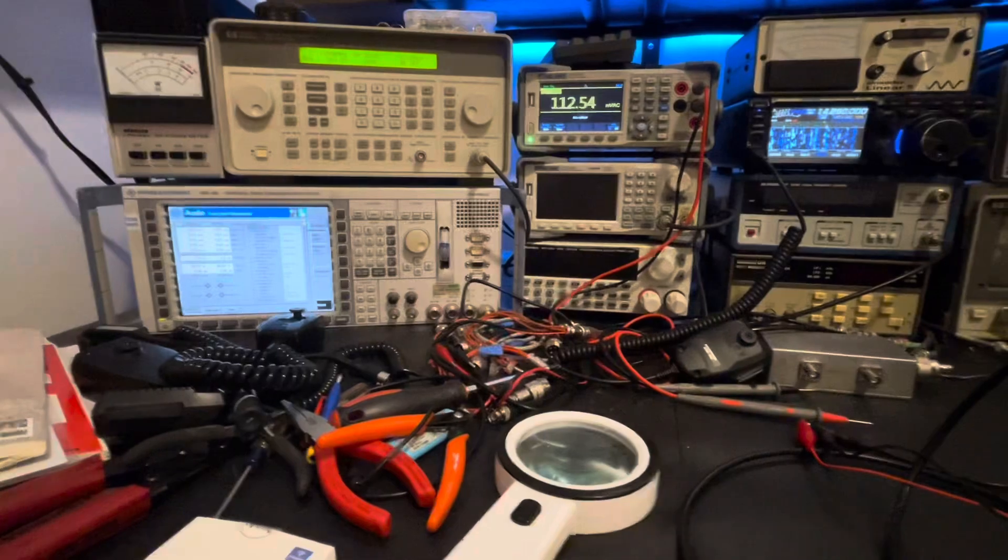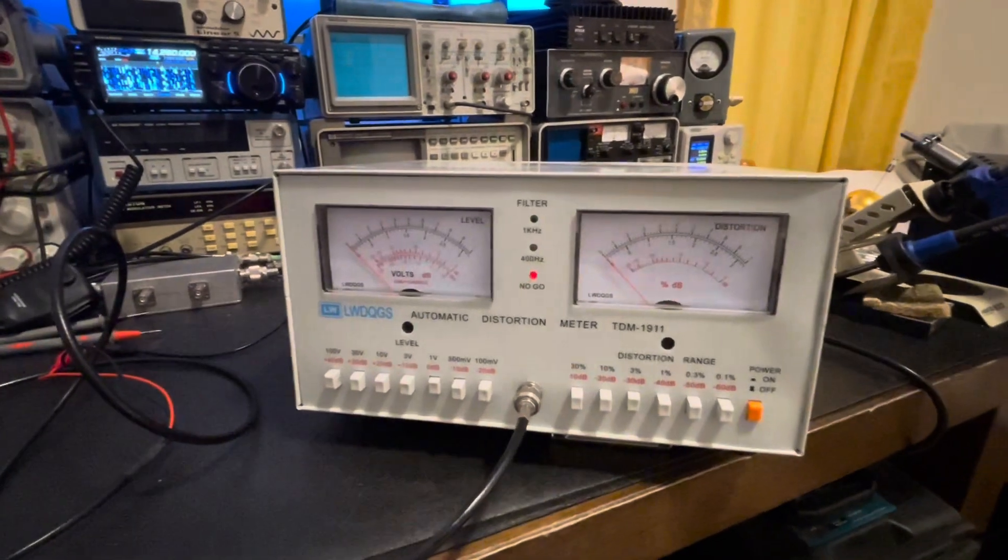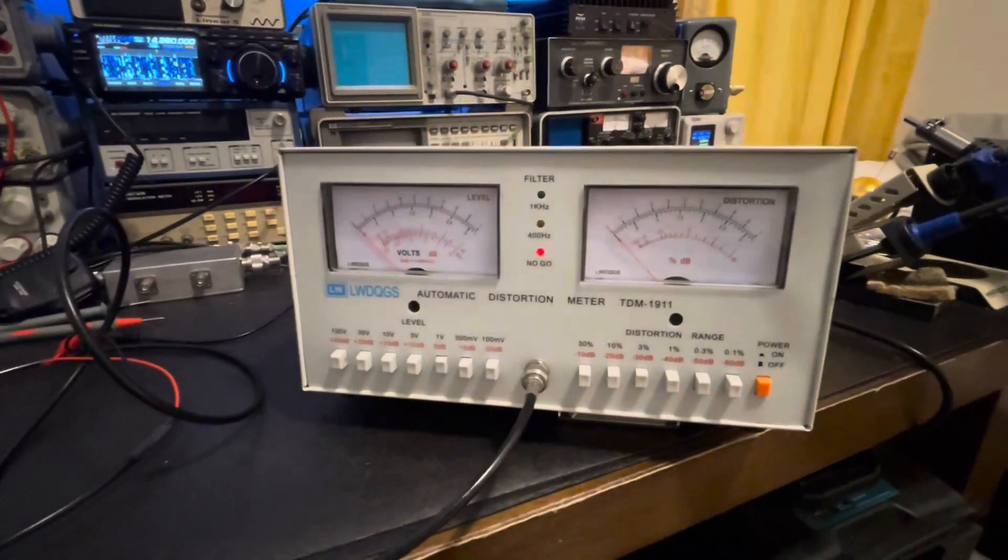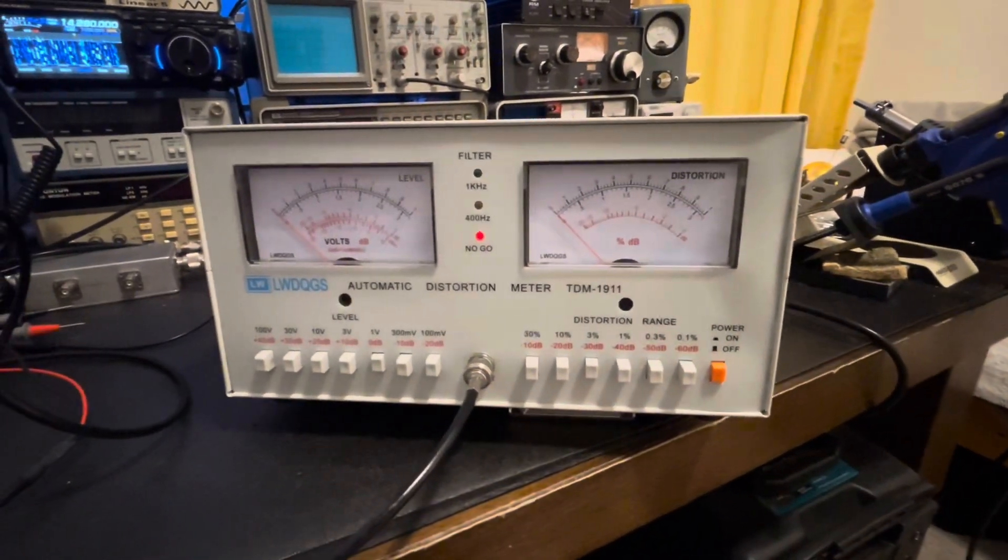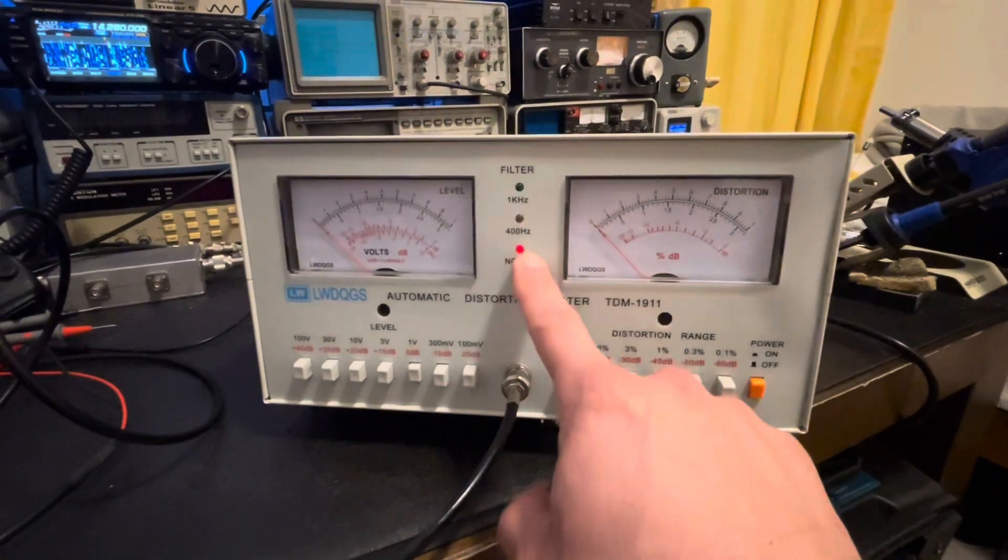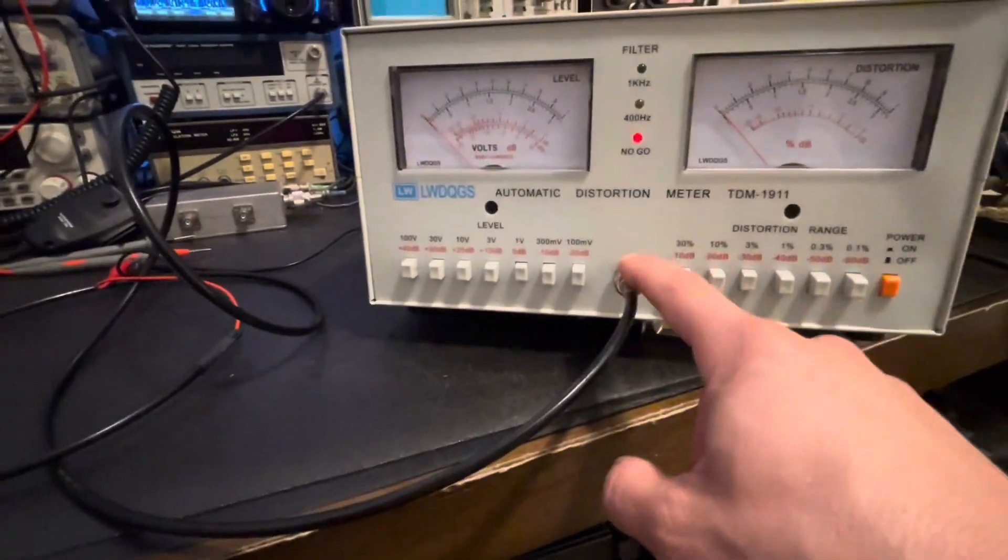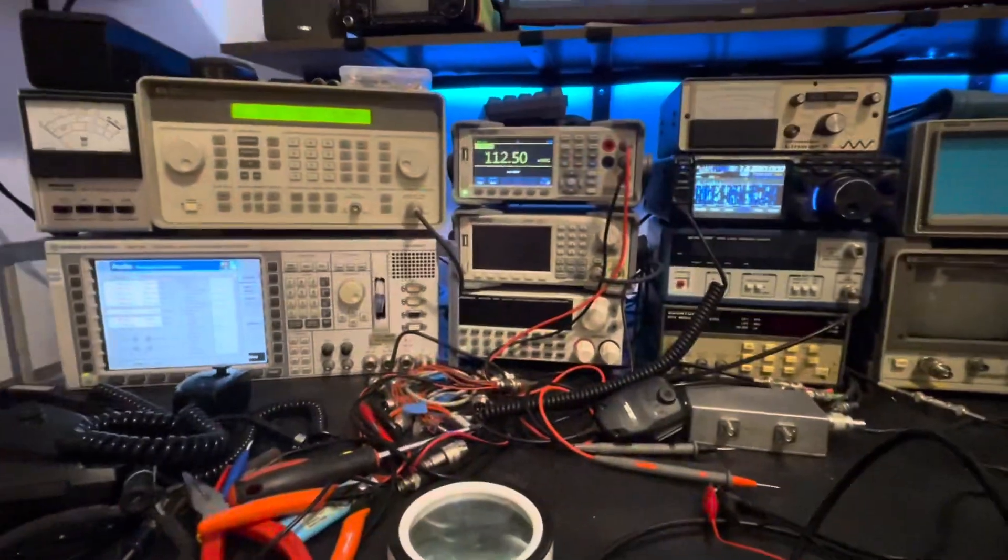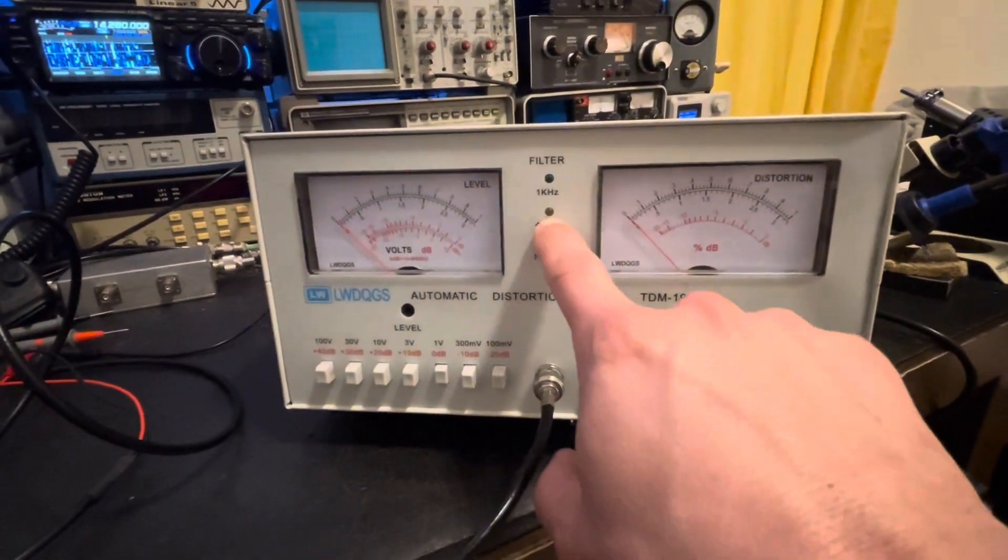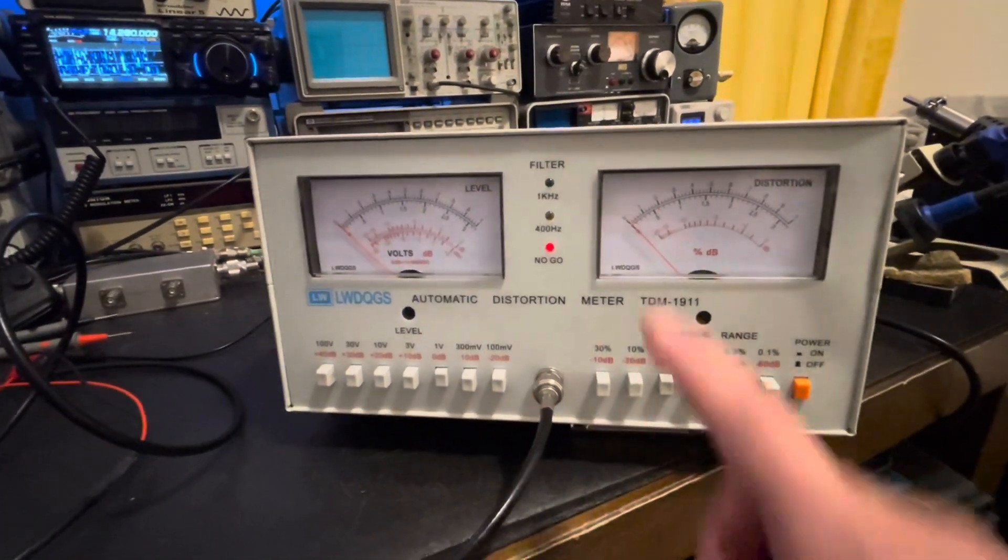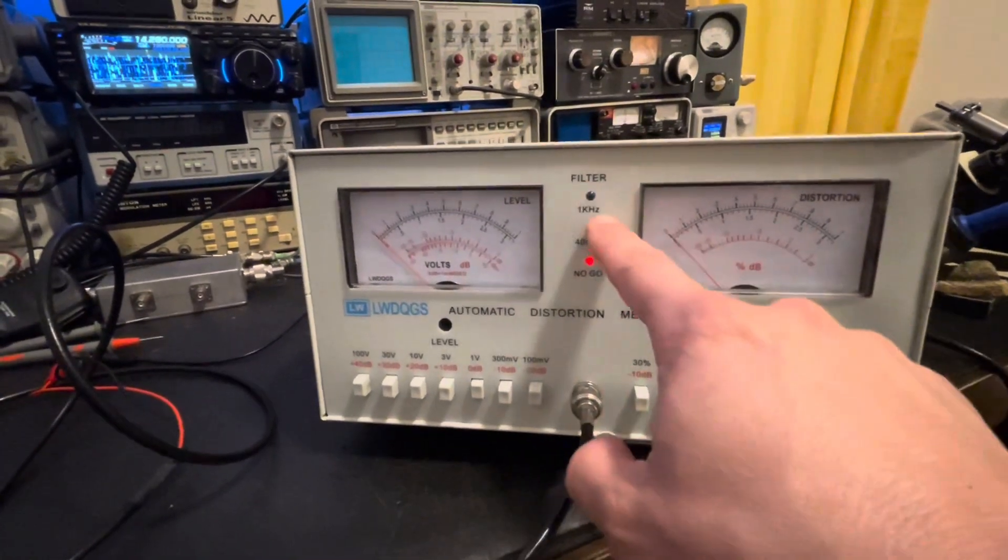Looking at this thing, we've got just a basic on-off power button and we have three LEDs on the front. This one down here is illuminated right now, it just says no-go because we have no signal input at this point. My generator is off so we've got no output out of the radio. We do have a 400 hertz LED and we have a one kilohertz LED there that'll illuminate when it detects one of those two frequency inputs.